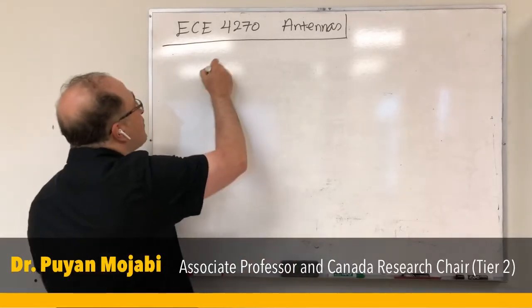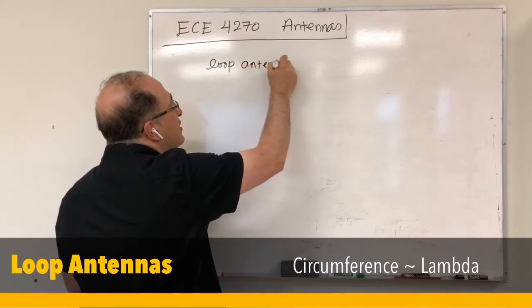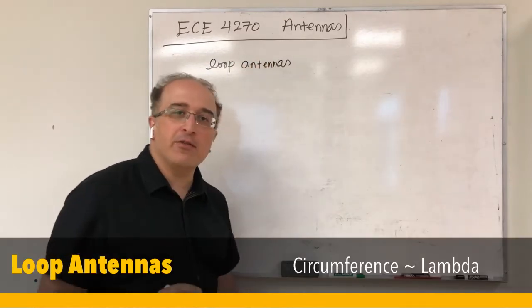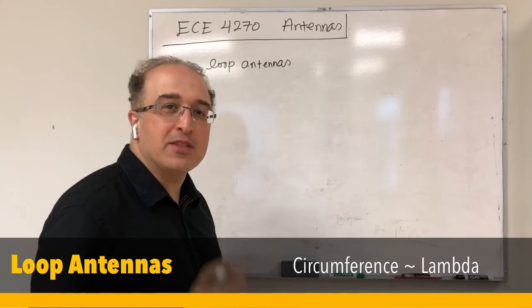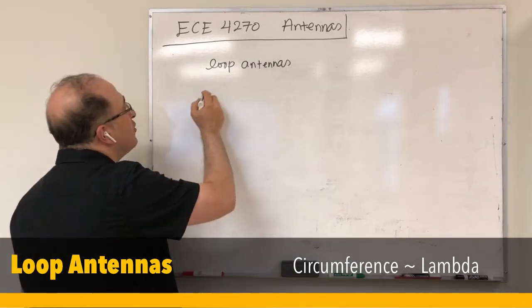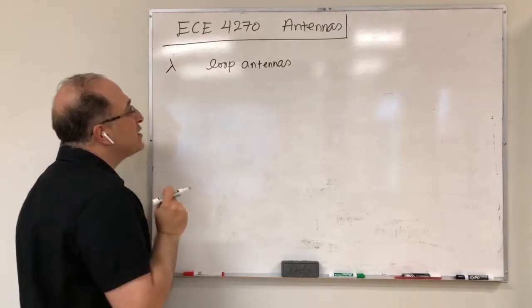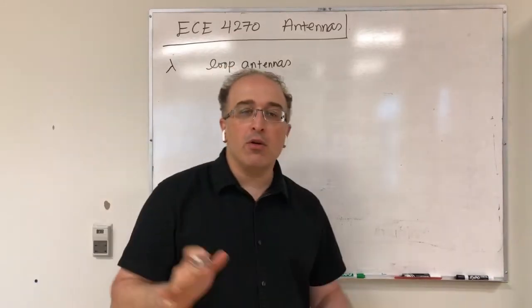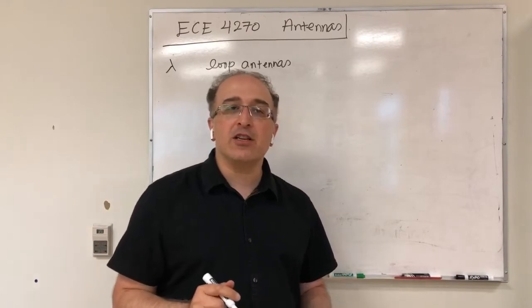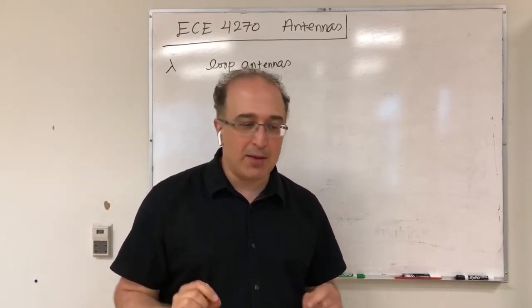In this lab we're going to talk about loop antennas, and in particular loop antennas of circumference one wavelength — lambda circumference loop antennas. We've discussed this in the lecture, so I'm just going to briefly go over it for the start of this lab.